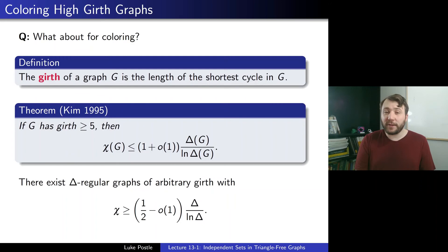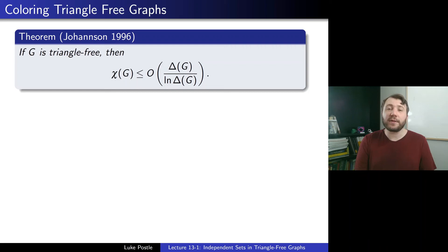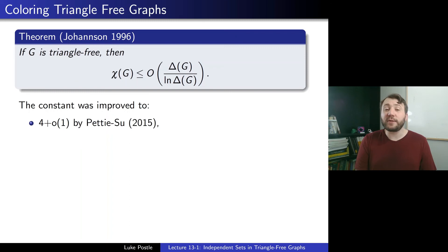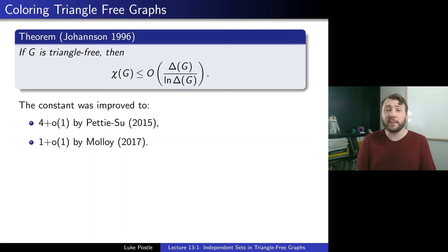There exist delta-regular graphs of arbitrary girth with chi at least (1/2 - o(1)) delta / log delta, showing a factor-of-2 gap. Going to higher girth doesn't help much — up to a constant, Kim's bound is correct. Johansson in 1996 showed that if G is triangle-free, then chi is also on the order of delta / log delta. The constant was improved to 4 + o(1) by Pettie and Su in 2015, and to 1 + o(1) by Molloy in 2017, matching Kim's bound.